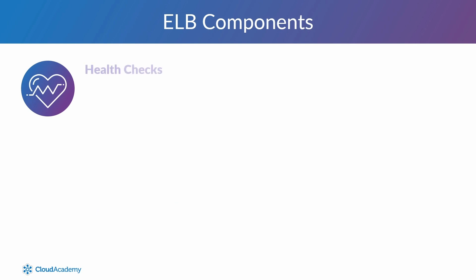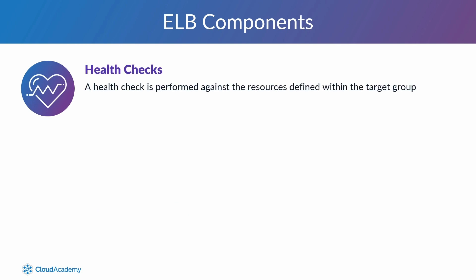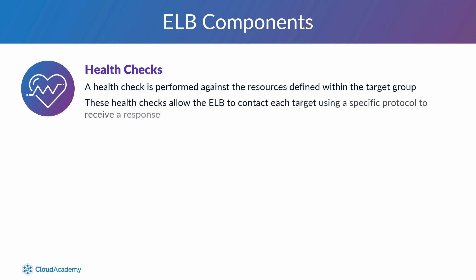Health Checks: the ELB associates a health check that is performed against the resources defined within the target group. These health checks allow the ELB to contact each target using a specific protocol to receive a response. If no response is received within set thresholds, then the ELB will mark the target as unhealthy and stop sending traffic to that target.